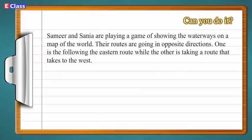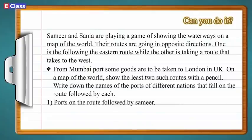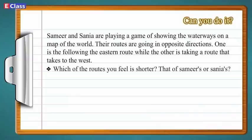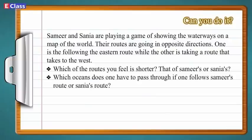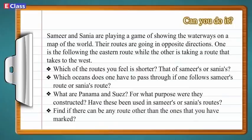Can you do it? Samir and Sanya are playing a game of showing the waterways on a map of the world. Their routes are going in opposite directions — one is following the eastern route, while the other is taking a route to the west. From Mumbai port, some goods are to be taken to London in UK. On a map of the world, show at least two such routes with a pencil and write down the names of the ports of different nations that fall on each route. Which of the routes is shorter? Which oceans does one pass through on Samir's or Sanya's route? What are Panama and Suez, and for what purpose were they constructed? Have these been used in Samir's or Sanya's routes?